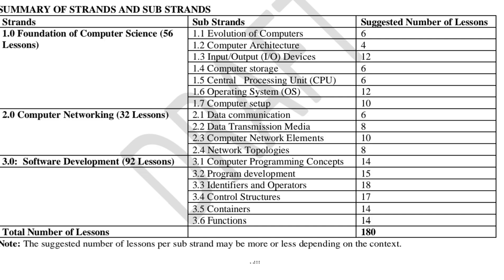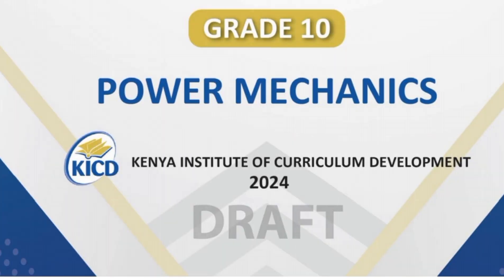Computer science will be covered in a total of 180 lessons. Let's move to another learning area in STEM pathway — power mechanics. Under power mechanics, the strands and substrands are as follows.